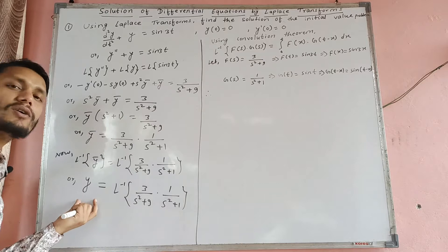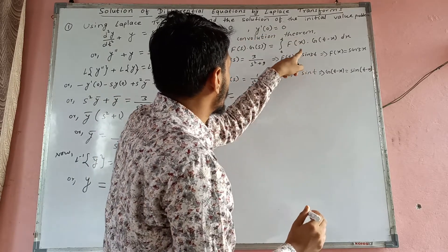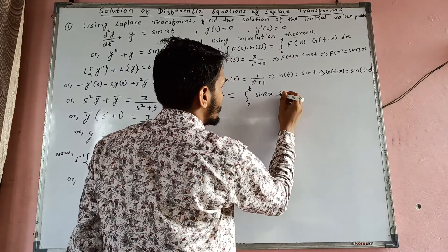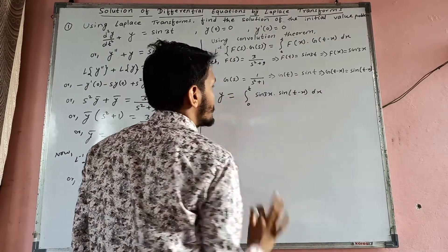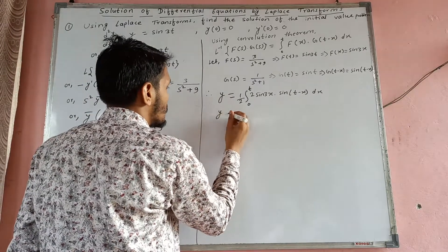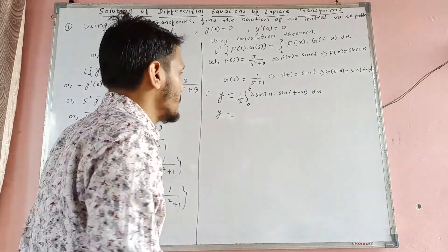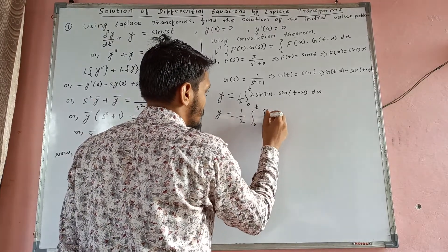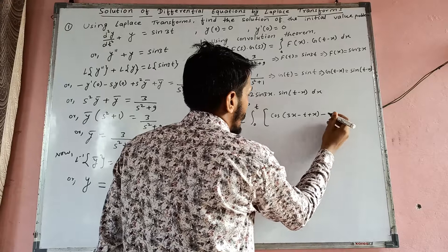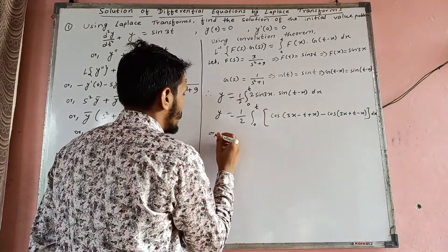So Y = integration 0 to t of sin 3x into g(t-x) = sin(t-x) dx. Aaba multiplication ko form ma cha bane trigonometric formula lagaunu parcha — addition ma change garna: 2 sin A sin B = cos(A-B) - cos(A+B). So Y = 1/2 integration 0 to t of [cos(3x-(t-x)) - cos(3x+(t-x))] dx.